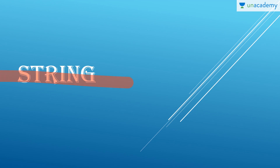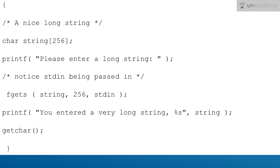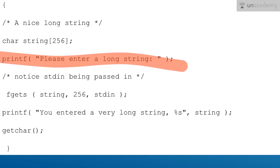Now let's move to strings. What is a string? A string is a group of characters — a sequence or series of characters, special characters, and numerals. It can also be thought of as an array of characters, but it is not a data type. The first program is simply to print a long string: we enter the string and then we print it.